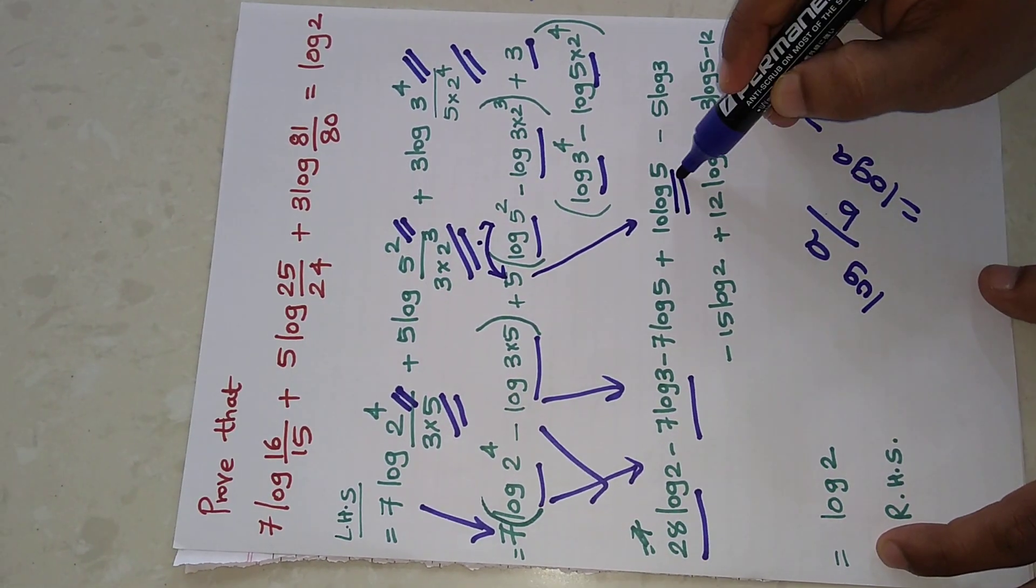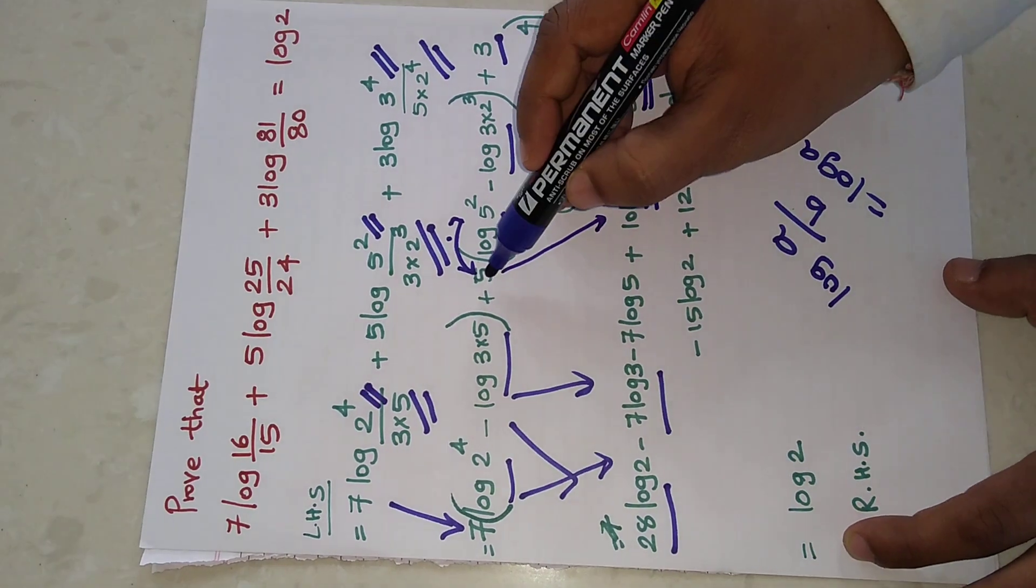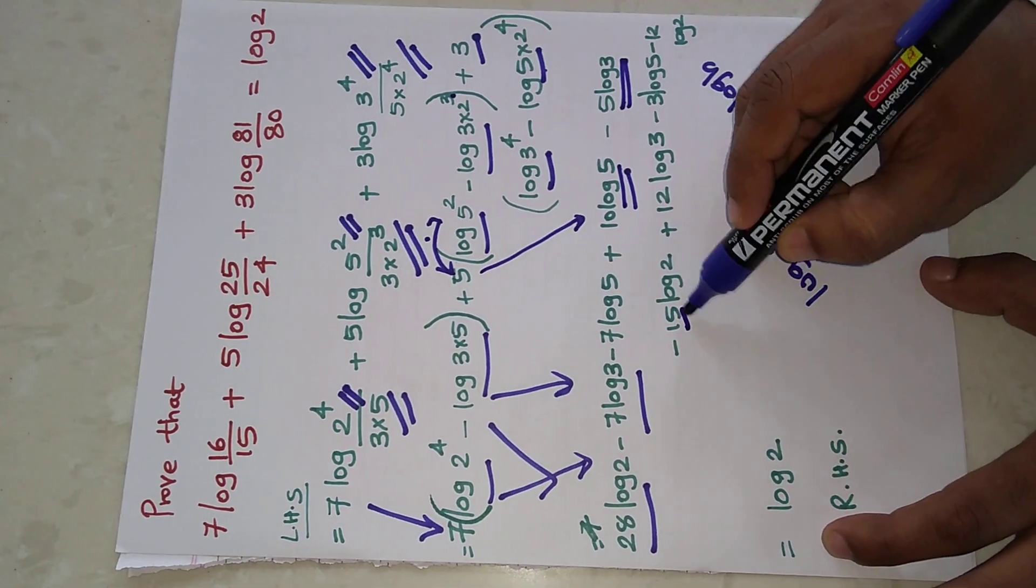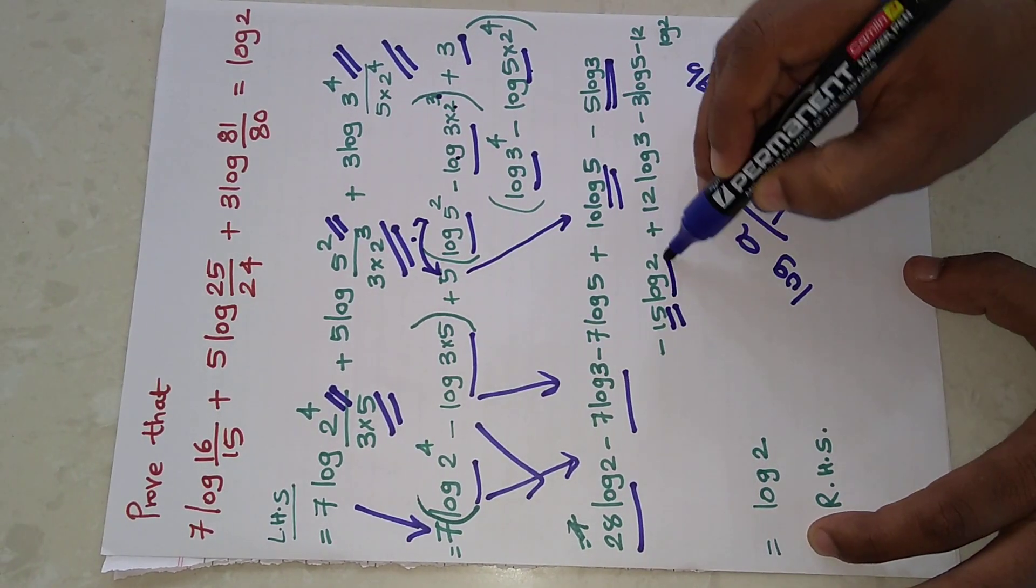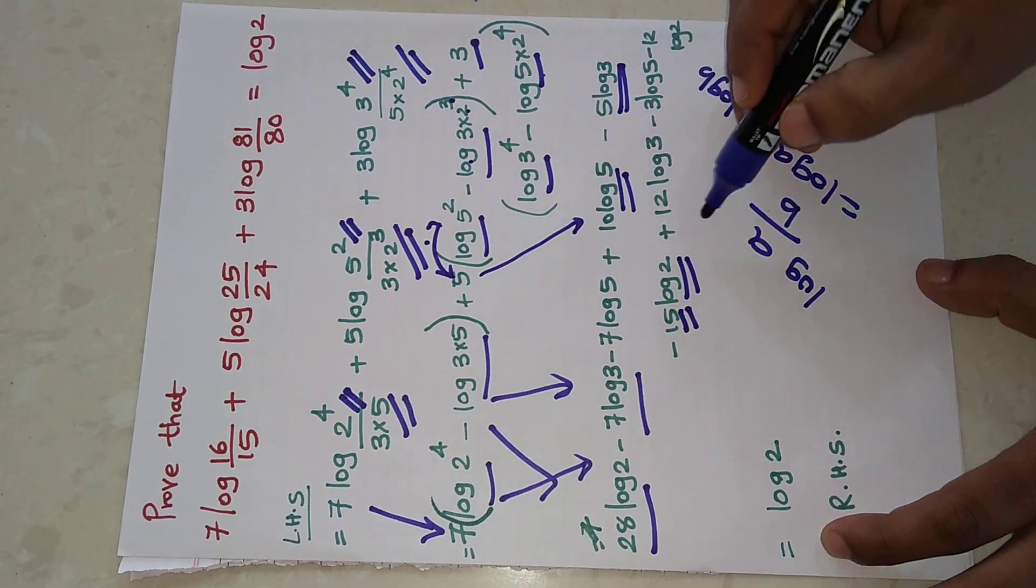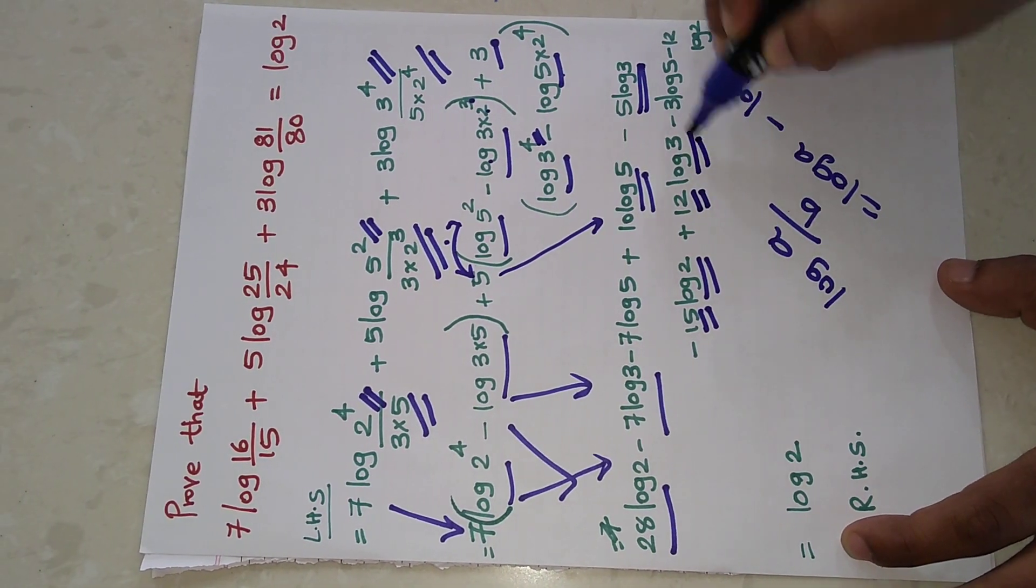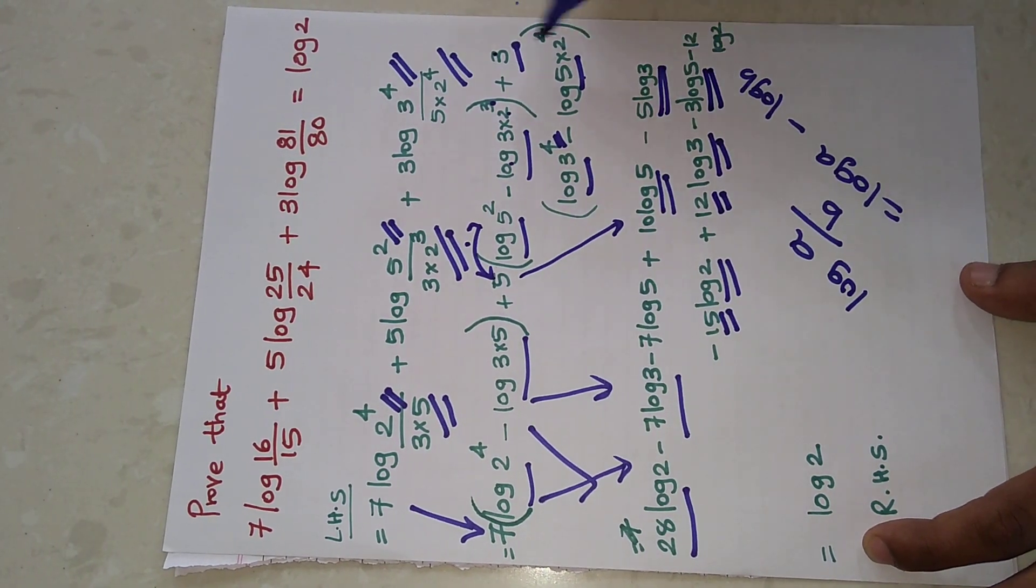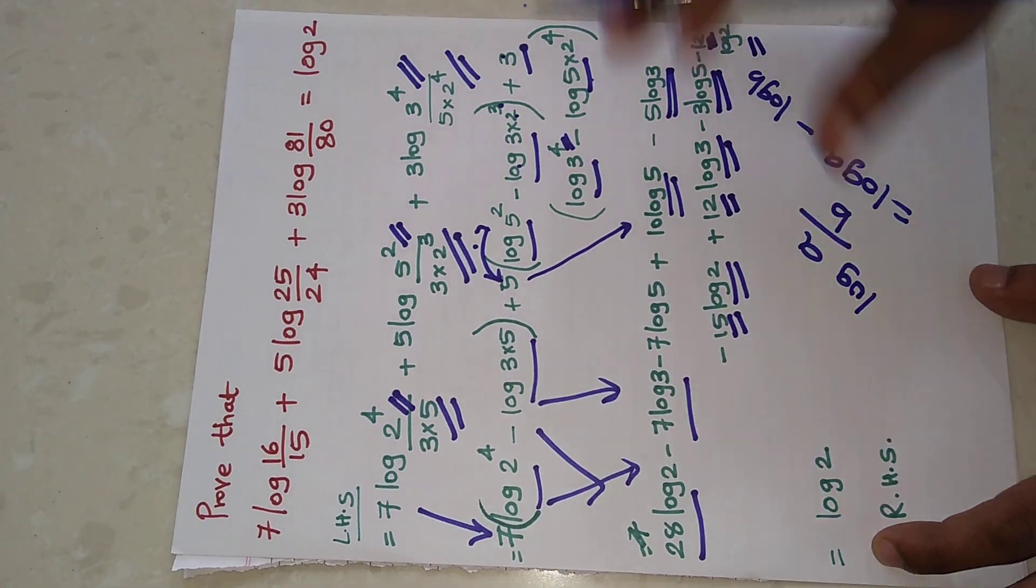5×3 and then log 2. Then the last part: plus 3×4 is 12 log 2. This is how we are opening the bracket. Now if we check all these terms...